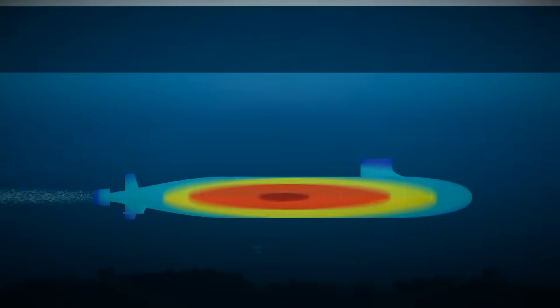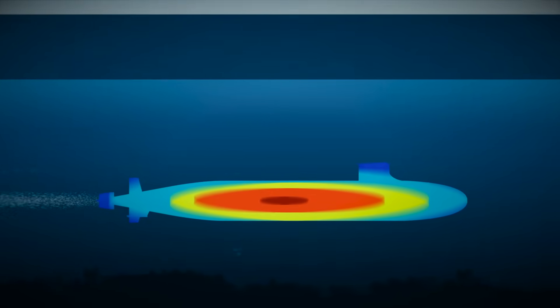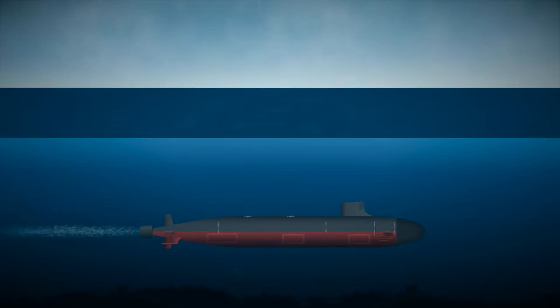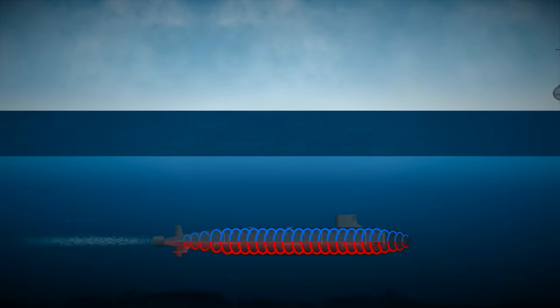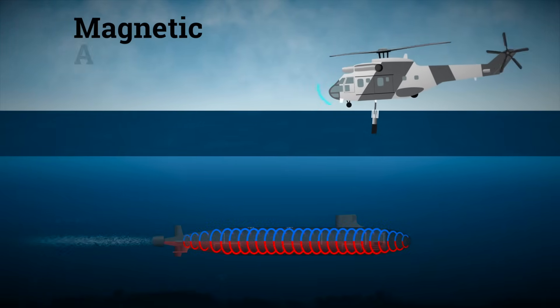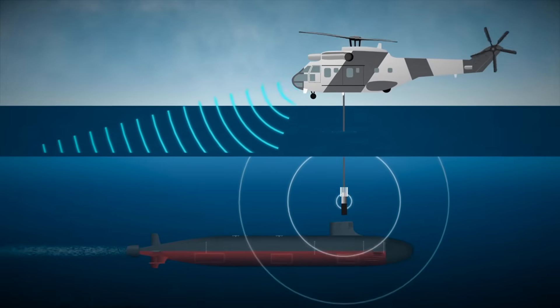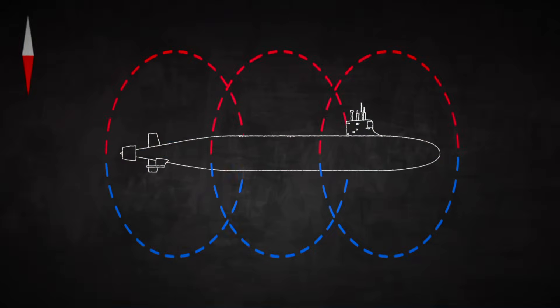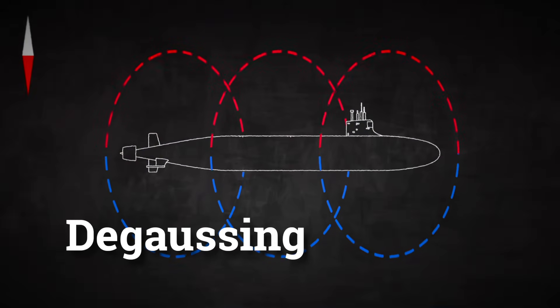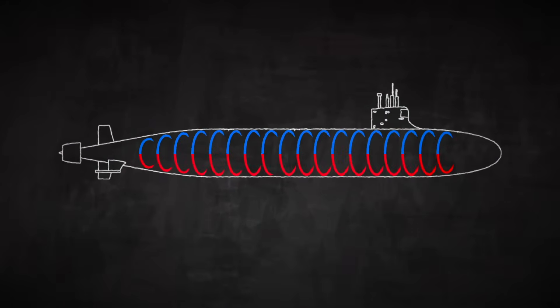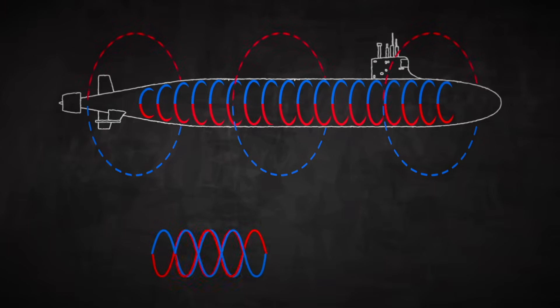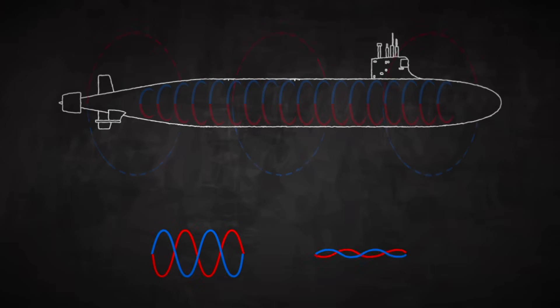Every submarine emits a magnetic field, just like any massive object made of steel moving through Earth's magnetic environment. That field can be detected by magnetic anomaly detectors, especially when they're fitted to aircraft looking for subs near the surface. To counter this, modern submarines use degaussing systems. These are coils built into the hull that create opposing magnetic fields, canceling out their own magnetic signature. It's like wiping away your fingerprint while you're still touching something.